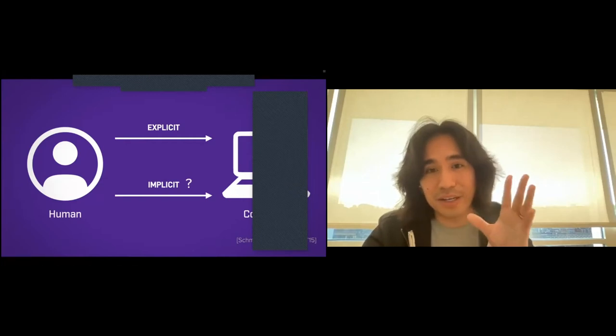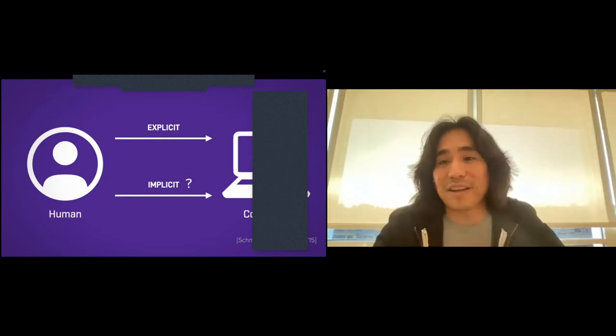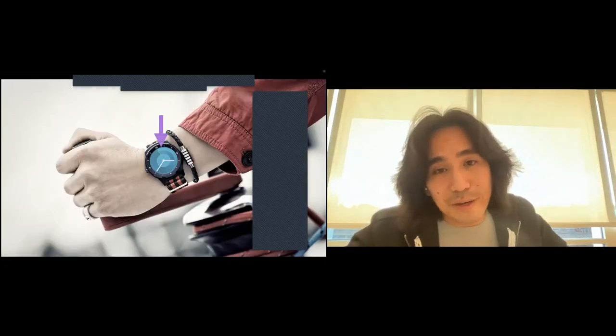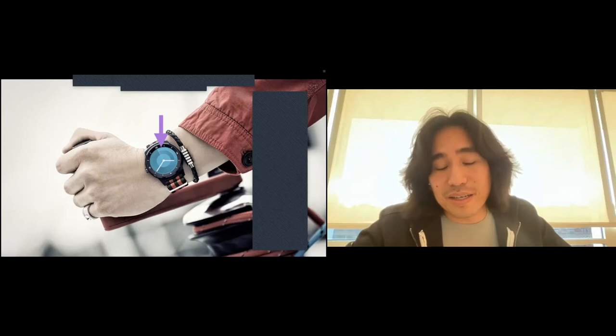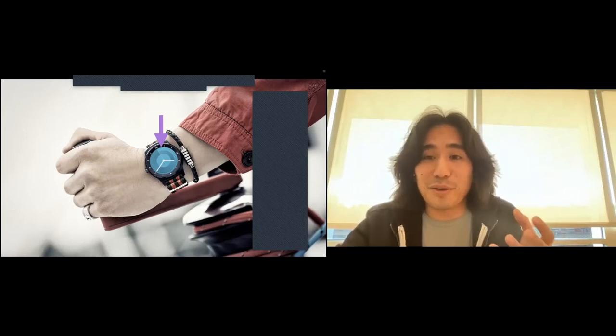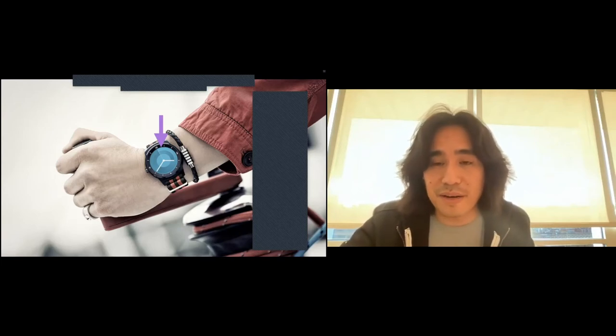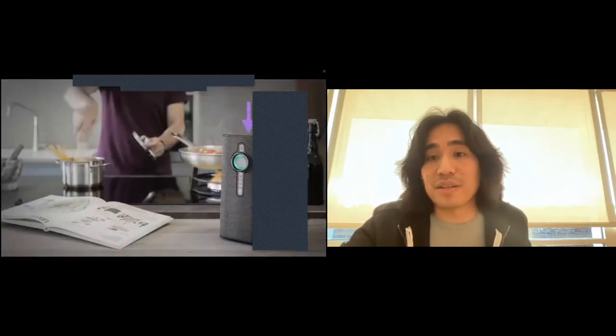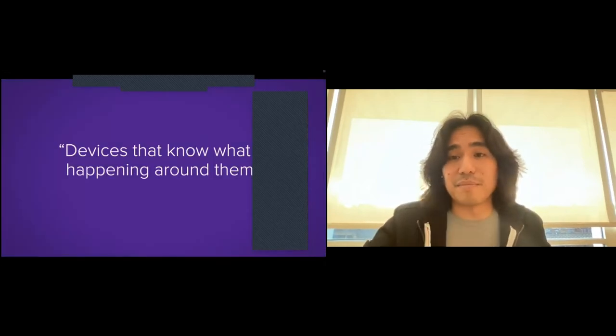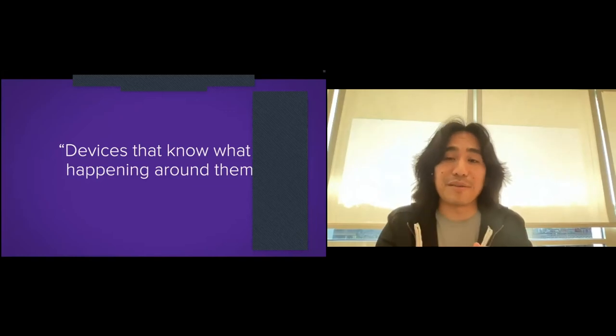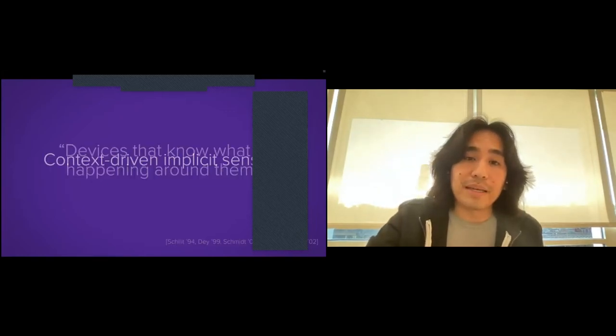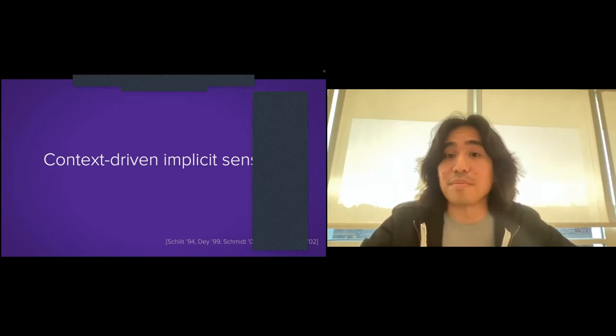In this entire talk, it's all about beefing up this implicit channel. Once you can do that, you can have a device that maybe knows what your hands are doing without you having to tell it — a very implicit way of providing input. Or if you have a smart speaker, it knows what's happening around it contextually, wherever you place it. What I'm really talking about when I say increasing that implicit input channel is devices that know what's happening around them. I call that context-driven implicit sensing — you don't have to provide any input to the system at all.